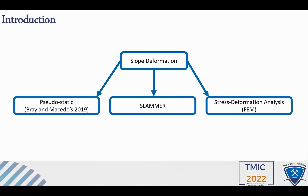The second method we used is the SLAMR code to estimate the seismic deformation. SLAMR stands for Seismic Landslide Movement Modeled Using Earthquake Records. This code is available for free on the USGS website — users can download it and start using it. SLAMR is also a built-in code inside Slide2 software, so if you have Slide2, you will automatically have SLAMR available within it.